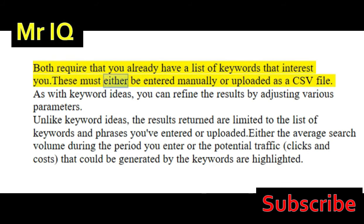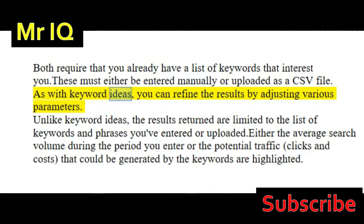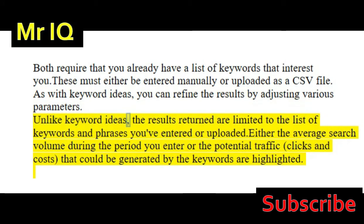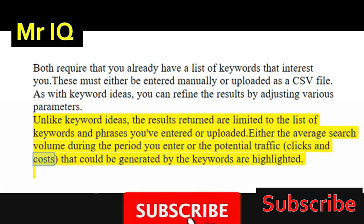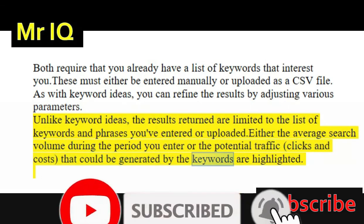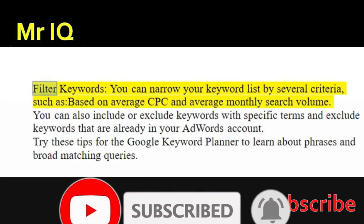Both require that you already have a list of keywords that interest you. These must either be entered manually or uploaded as a CSV file. As with keyword ideas, you can refine the results by adjusting various parameters. Unlike keyword ideas, the results returned are limited to the list of keywords and phrases you've entered or uploaded. Either the average search volume during the period you enter or the potential traffic, clicks, and costs that could be generated by the keywords are highlighted.